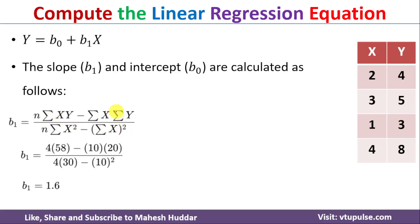We have already found the values of Σxy, Σx, Σy, and Σx², so we just replace those values in the formula. Substituting, we get b1 = 1.6.